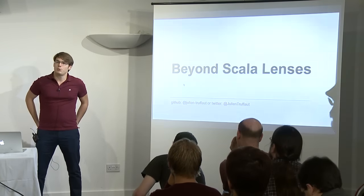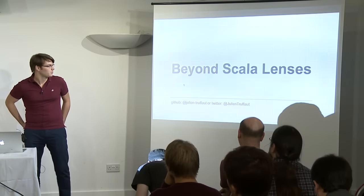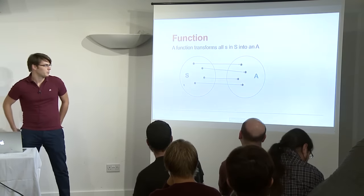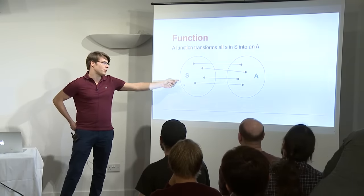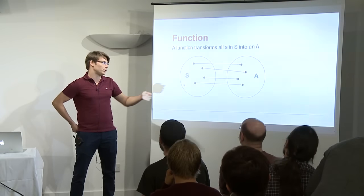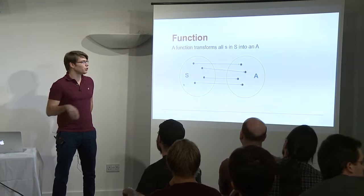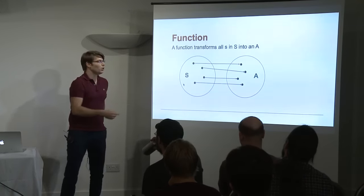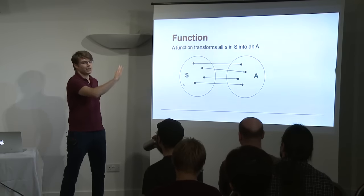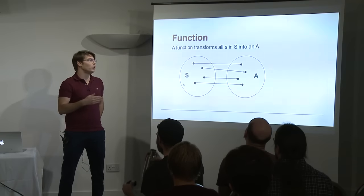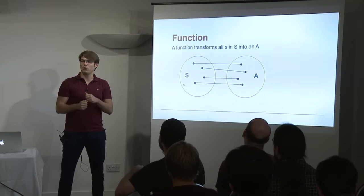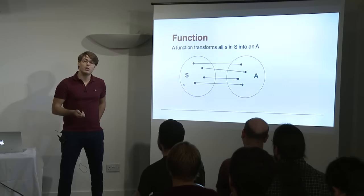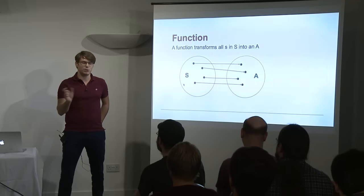You can really interrupt me at any time if you have any question or something is not clear, really don't hesitate. So let's start with the basics of functional programming, which is a function. What's a function? It has an input type — I call it S — and an output type A, also called domain and codomain. A function transforms any value in the input type into a value in the output type.